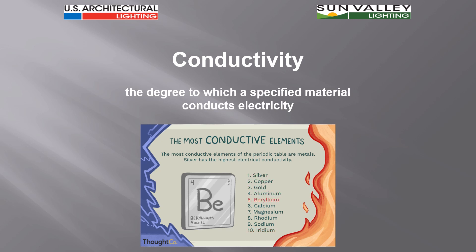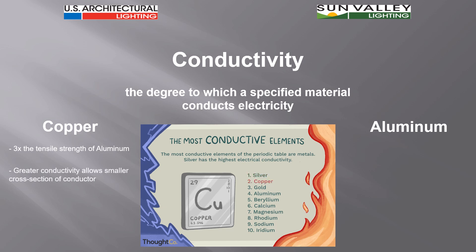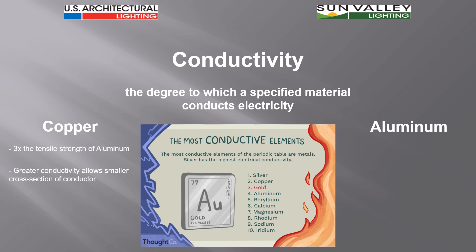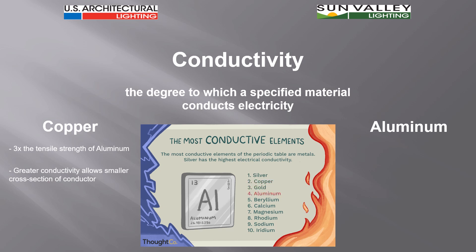Copper is what we see in most instances. First, copper has three times the tensile strength of aluminum — it's a much tougher material when pulling it end to end, easy to pull through conduit, and doesn't want to break. It is heavier, so that comes into play later. But its greater conductivity allows a smaller cross-section, so we can use a lighter or smaller gauge of copper wire to carry a specified amount of current versus what we'd need with aluminum.